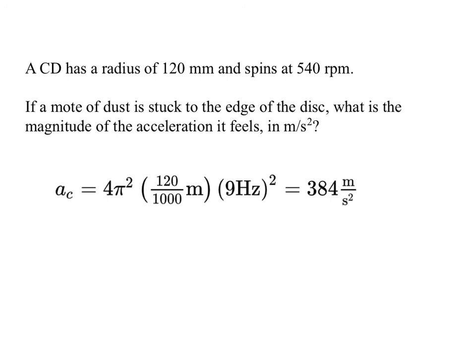Again, remembering to convert to meters, and eventually converting this to seconds. And we get quite a number. 384 meters per second squared. That's something like 40 G. So the edge of the disc is going around pretty fast. It requires a pretty strong force internally.